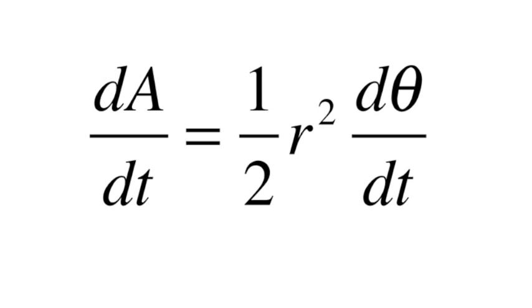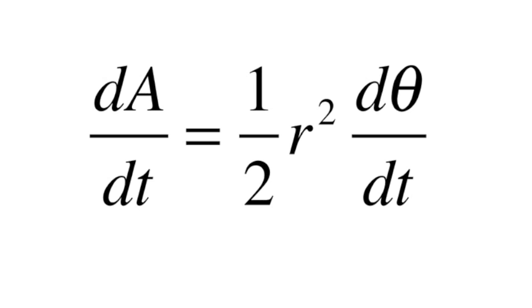By then taking the derivative with respect to t of both sides, we get our final equation: dA/dt is equal to one-half r squared dθ/dt.